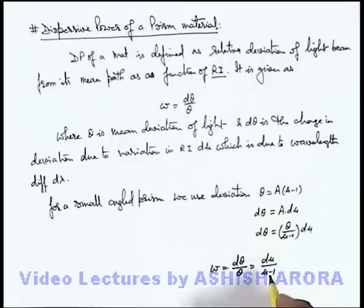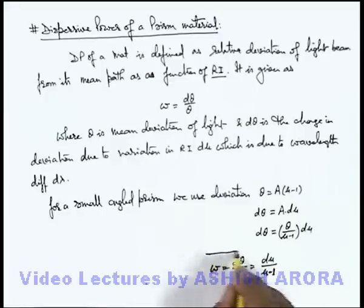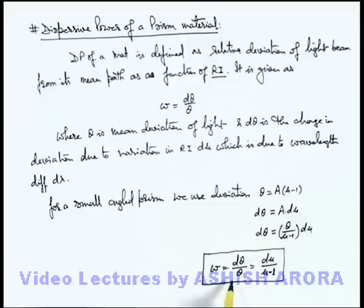So at a specific value of wavelength, if refractive index is μ, which is considered for a mean wavelength, this will give us mean deviation. And dμ is the variation in refractive index due to variation in wavelength dλ. So this omega gives us an idea about how much deviation would be there between the extreme wavelengths in the light beam.